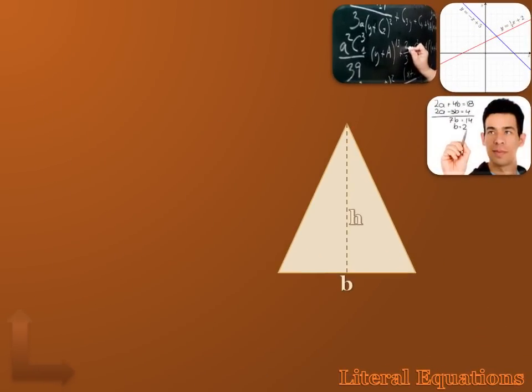By now you know a number of geometric formulas, and here's one you probably know. The area of a triangle equals 1⁄2 the base times the height. Well, that's really a literal equation, isn't it? I've got three variables, a, b, and h, and they're in an equation form. And this equation, or this formula, would help me figure out what the area of a triangle was if I knew the base and I knew the height. But what if I knew the area, and I knew the height, but I didn't know the base, and I was asked to solve for the base? How would I do that?